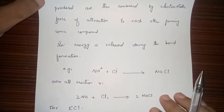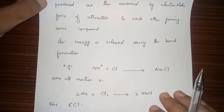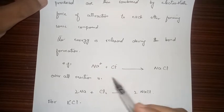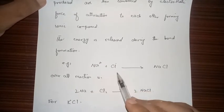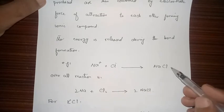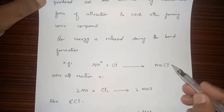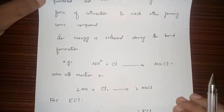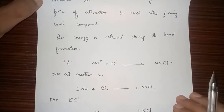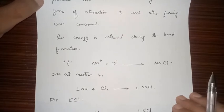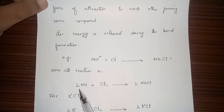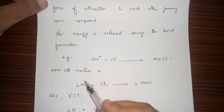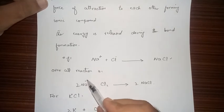For example, in NaCl, the sodium ion and chloride ion come close to each other and form NaCl. They are held together by the electrostatic force of attraction, which is the force between the positive and negative ions. The overall reaction shows two atoms of sodium reacting with a chlorine gas molecule.